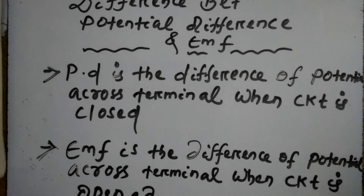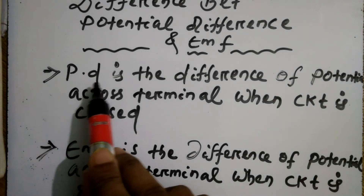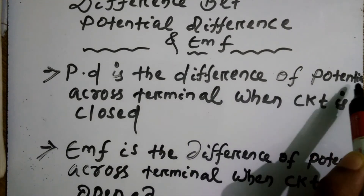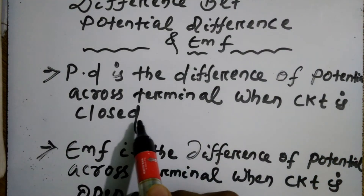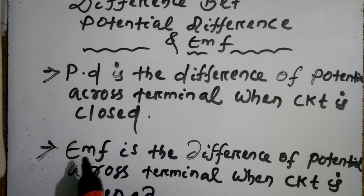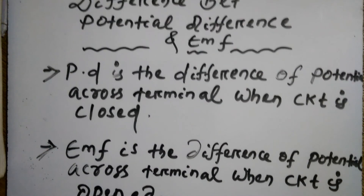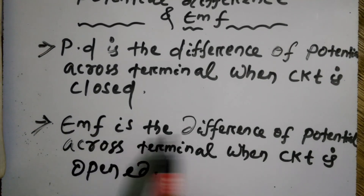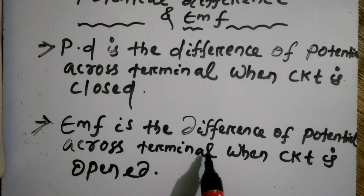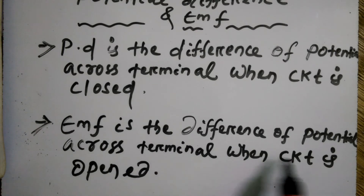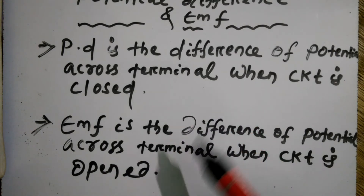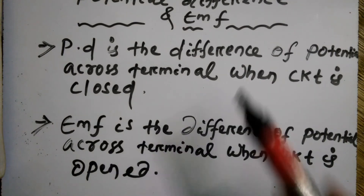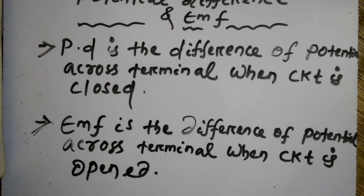To summarize: potential difference (PD) is the difference of potential across the terminals when the circuit is closed. EMF is the difference of potential across the terminals when the circuit is open. That is the basic difference between potential difference and EMF.